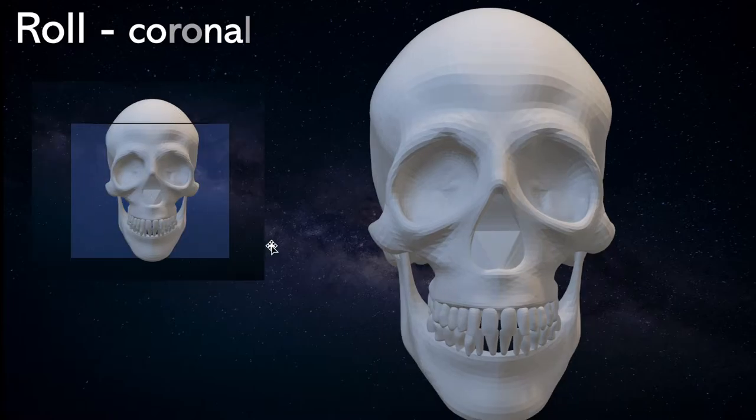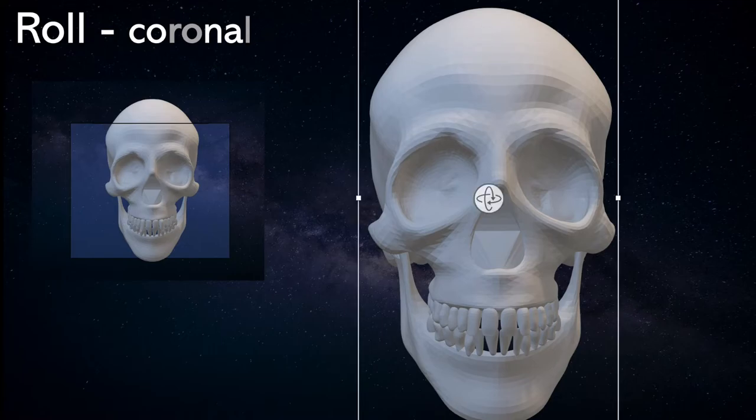Let's come to roll. In roll, our coronal plane, or as Ackerman and Proffit mentioned, our vertical plane, rotates. An easy way to learn this is that in coronal there are already the letters of roll written. So roll is coronal roll, where the coronal plane rotates along its axis. So this is roll.